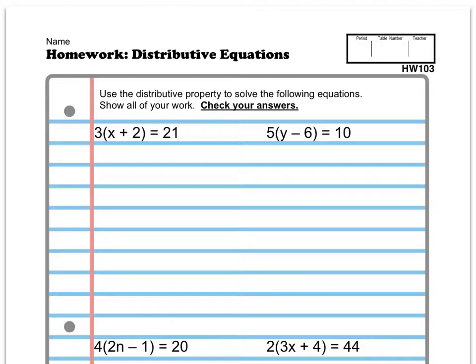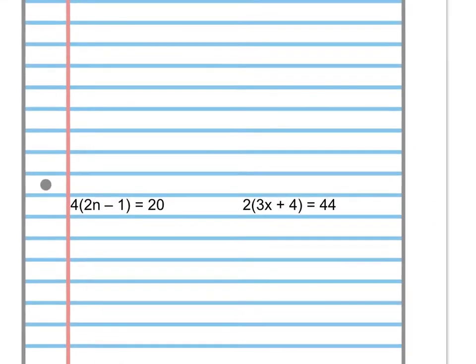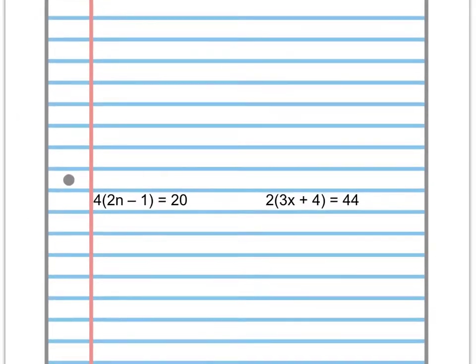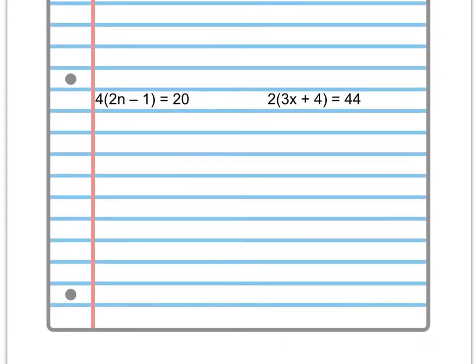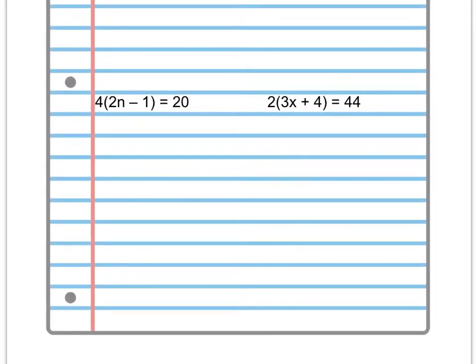We're going to jump right in and do, let's do this problem here on the bottom right. We got 2 times the quantity of 3x plus 4 equals 44.